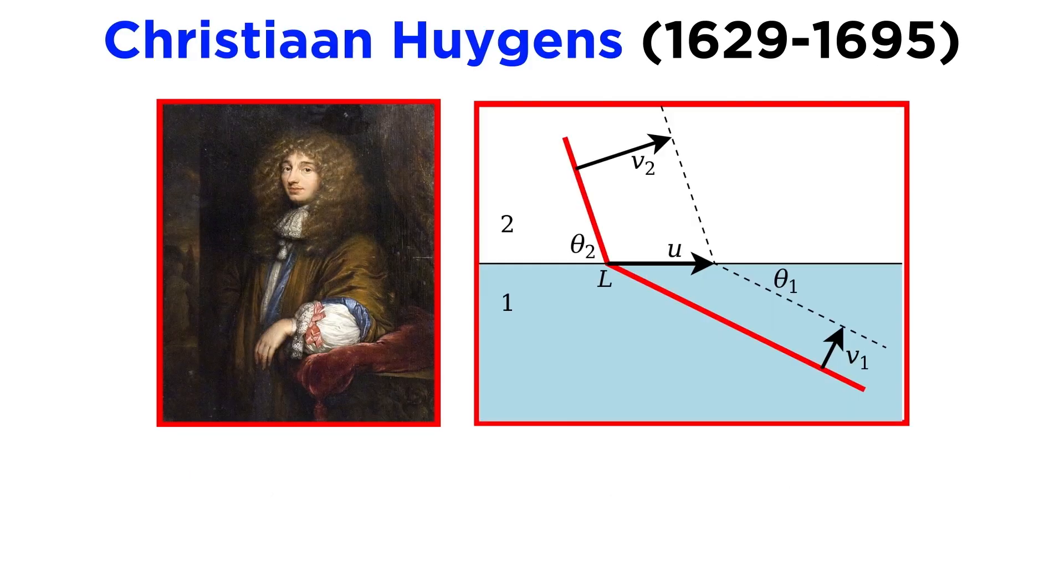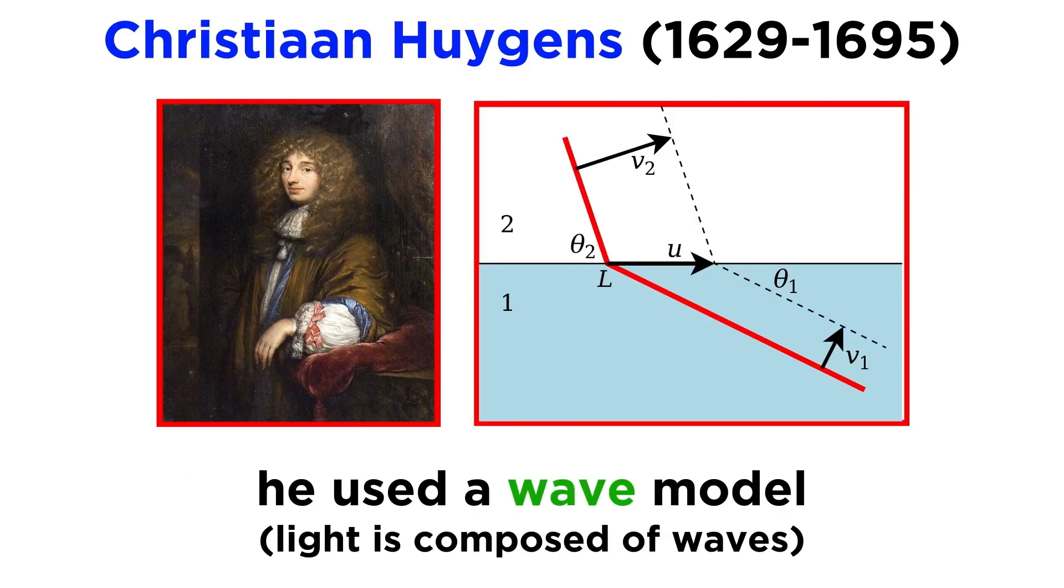But others at the same time, such as Christian Huygens, showed that optical phenomena like reflection and refraction could be best explained by characterizing light as being made of waves.